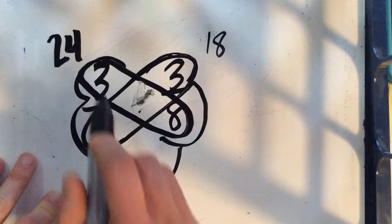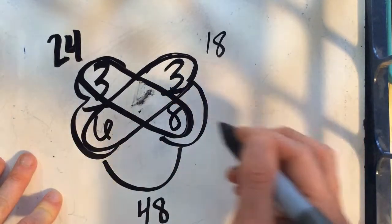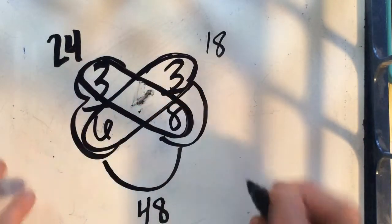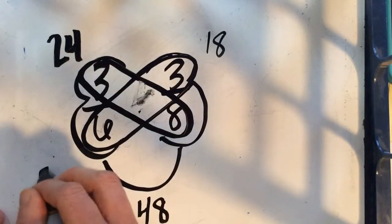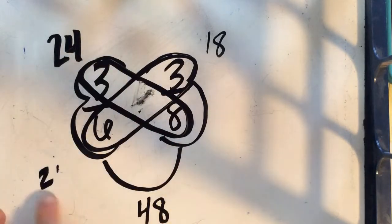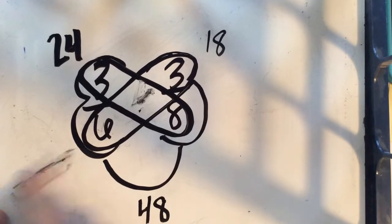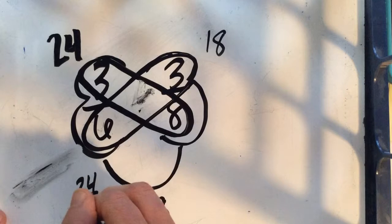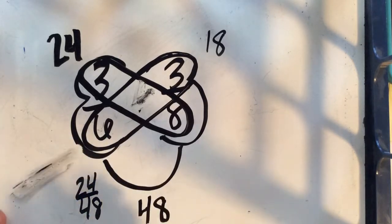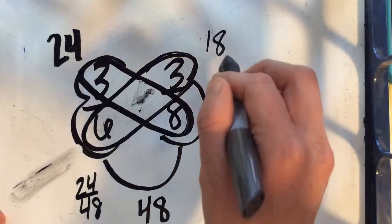So an equivalent fraction to three sixths would be 24 forty-eighths, and an equivalent fraction for three eighths would be 18 forty-eighths.